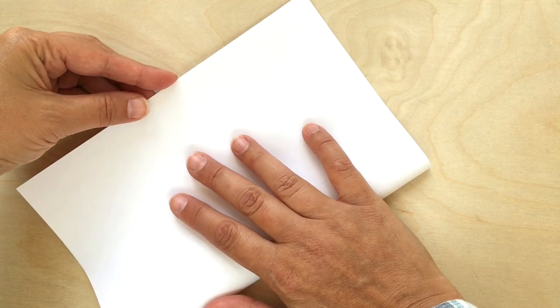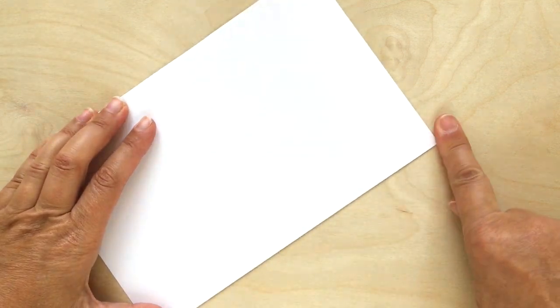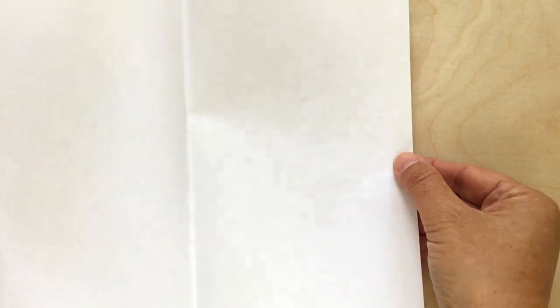And to get started you just fold it in half like so. Make sure you crease it really well. I'm just using my fingers but of course you could use a scoring tool.